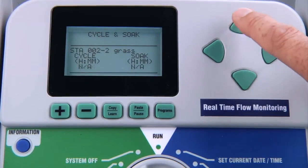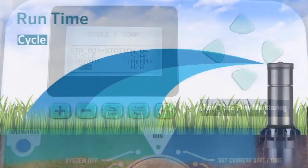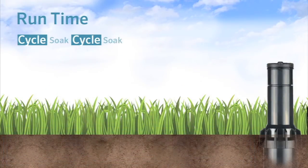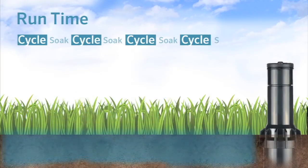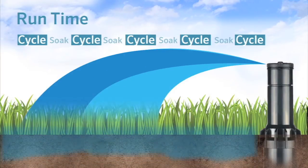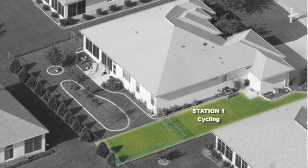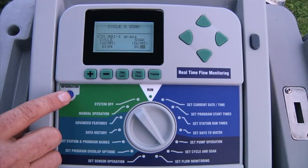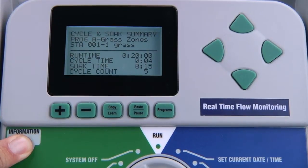To advance to other stations, use the up arrow. This does not change the total run time of that station — it only limits how much of that run time will be applied at one time and sets a soak time for it to absorb into the soil before another cycle is applied. The controller will continue to water the rest of the stations while the previous station is soaking. Within the cycle and soak dial position, by pressing and holding the information button, you can see a cycle and soak summary per station that includes the run time, cycle time, soak time, and the number of cycles the run time was divided into.